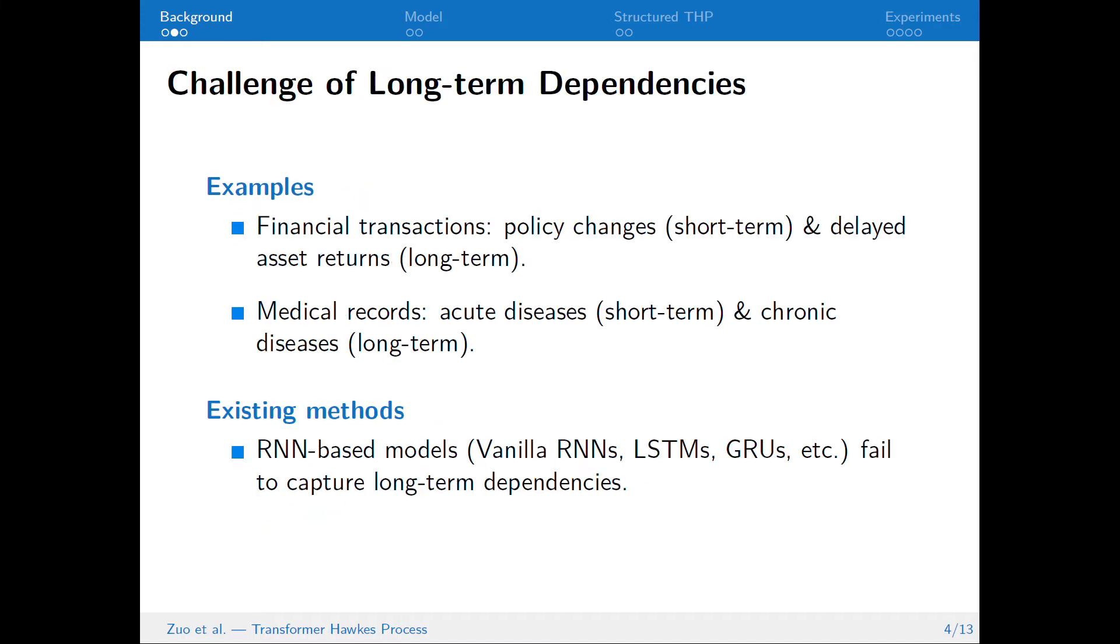The challenge of modeling event sequence lies in the long-term dependencies, which are natural in, for example, delayed asset returns in financial transactions and chronic diseases in medical records. Existing recurrent neural network-based models fail to capture such dependencies.